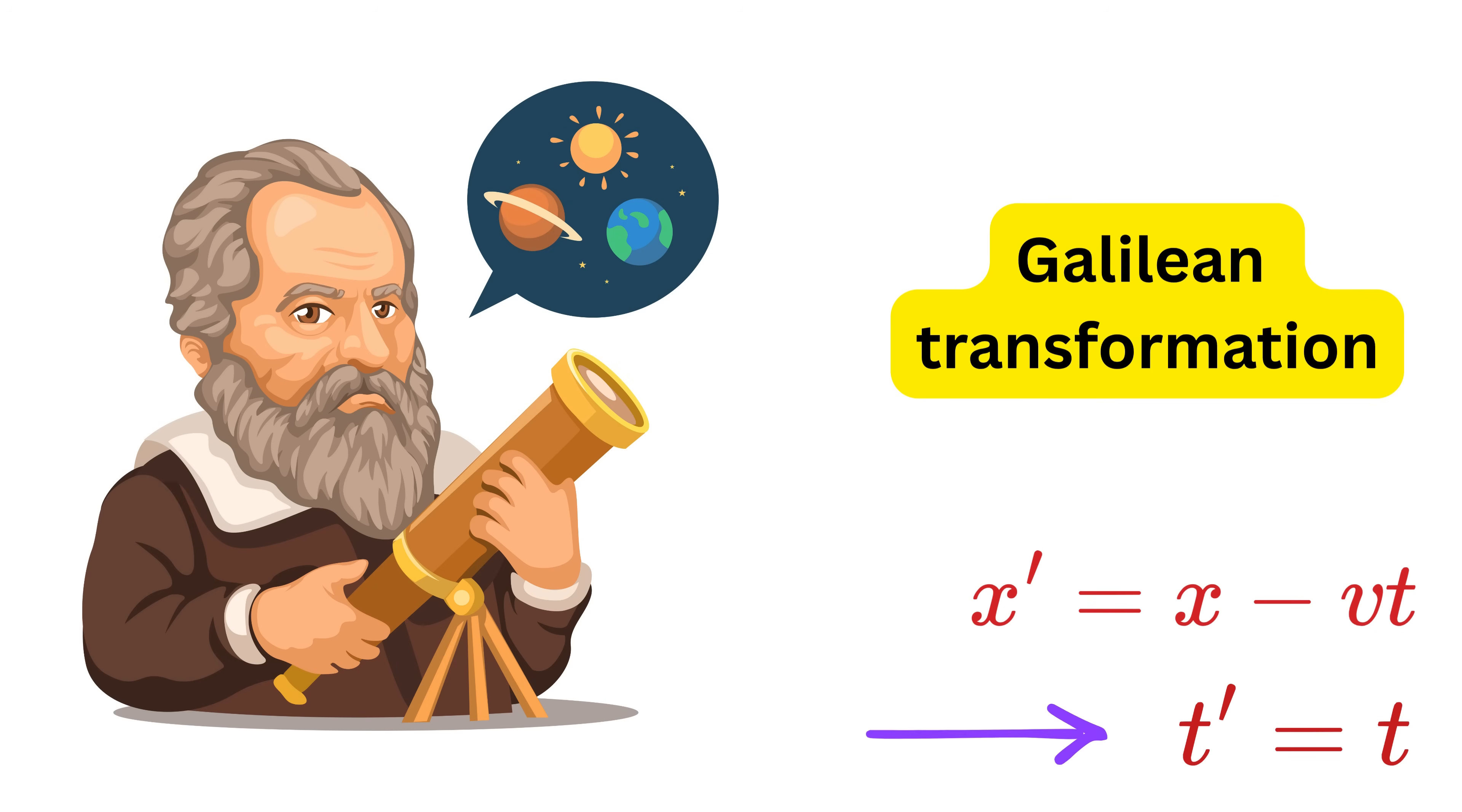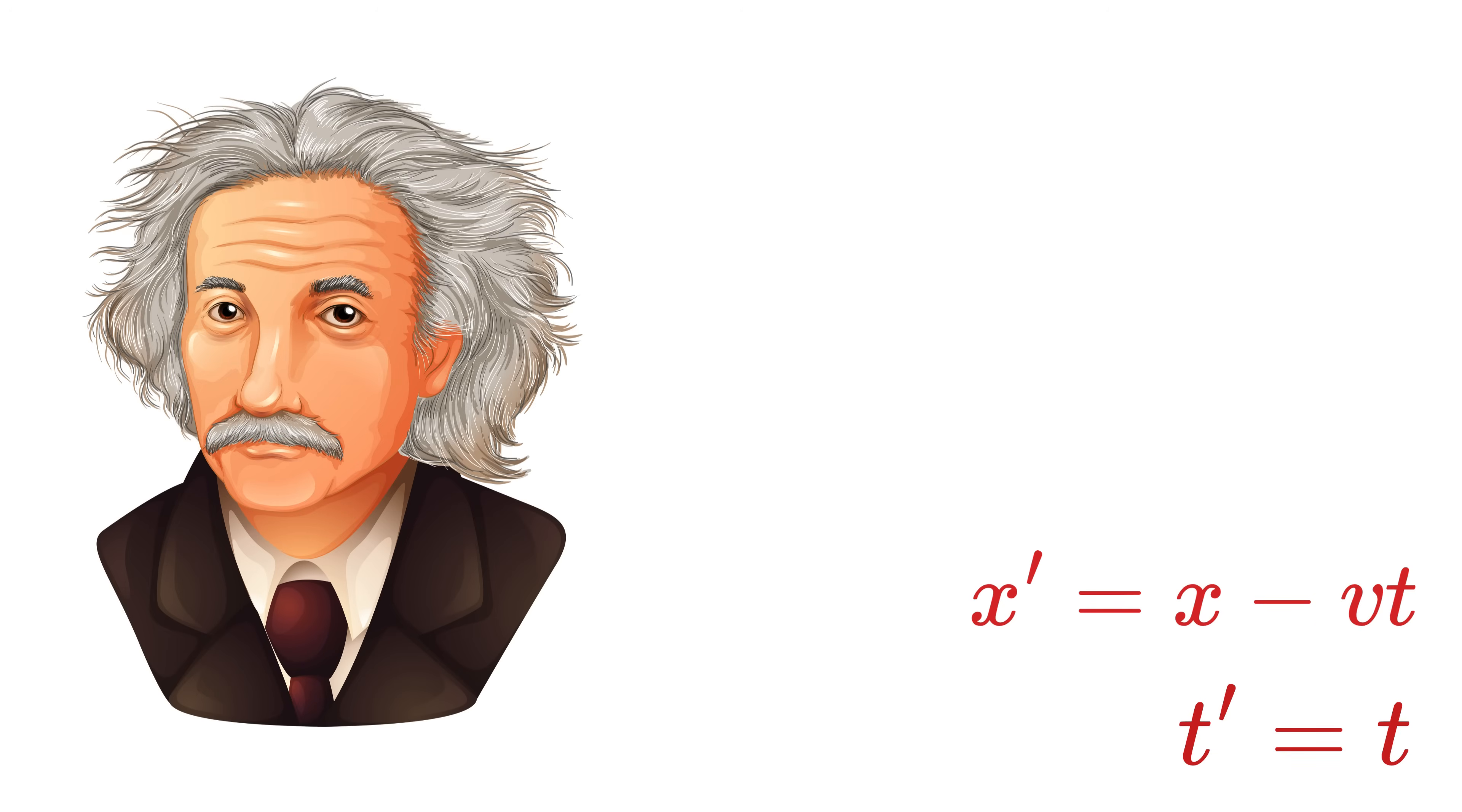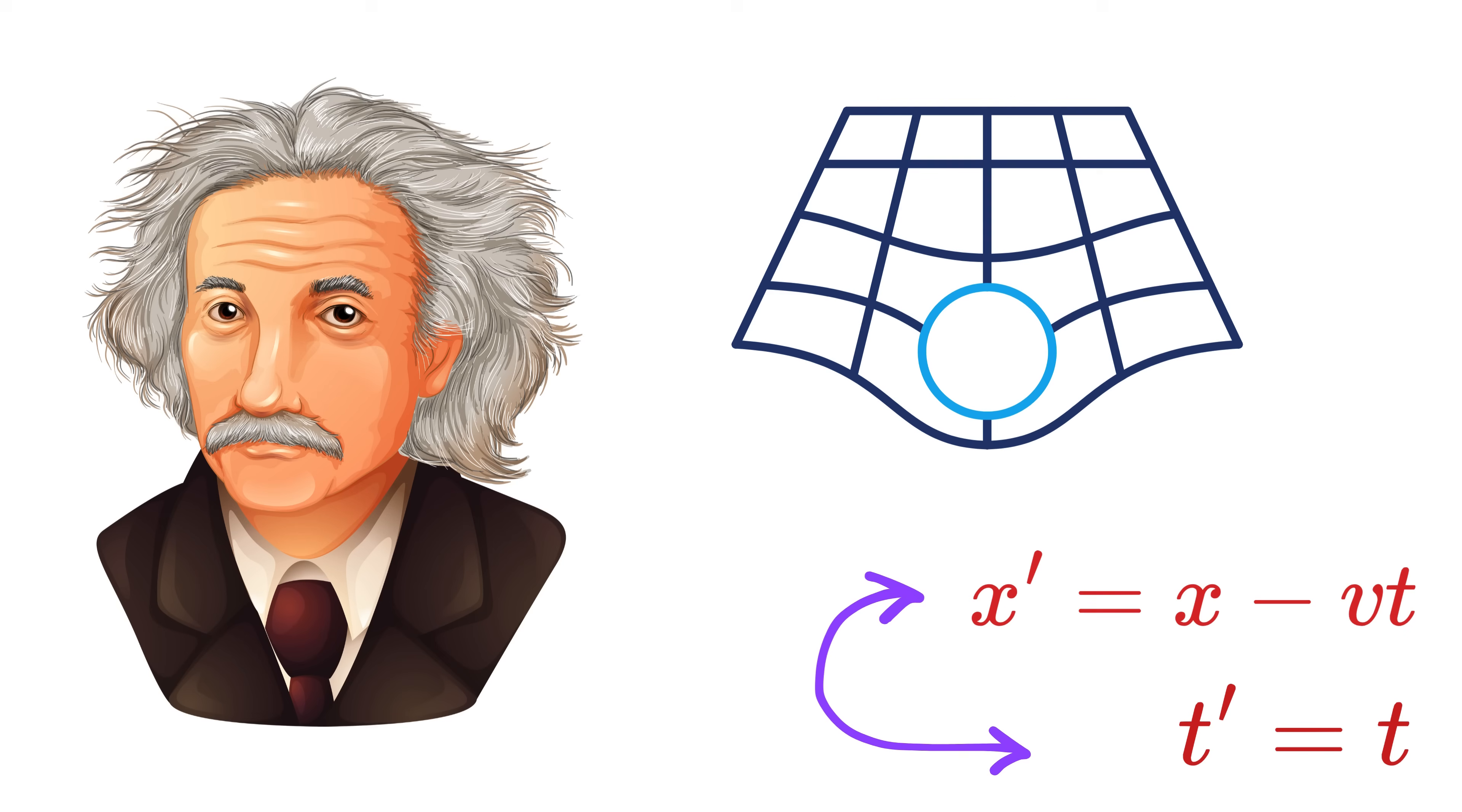No matter how fast Bob moves, the speed of light never changes. This broke the Galilean idea completely. If time is truly the same for everyone and distances change only by v times t, then how can the speed of light stay the same for both Alice and Bob?